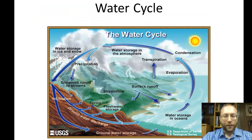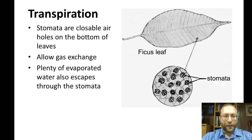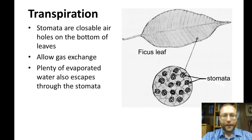We have a diagram of the water cycle, and you basically have to know it. The main thing which you may not be familiar with from junior high and elementary school is transpiration. At the bottom of every leaf, you'll find stomata. Stomata are air holes with guard cells around them, which open and close them, and they allow for gas exchange. While that occurs, plenty of water also escapes through the stomata. We'll get more into how it opens and closes later in the year when we talk about negative feedback.